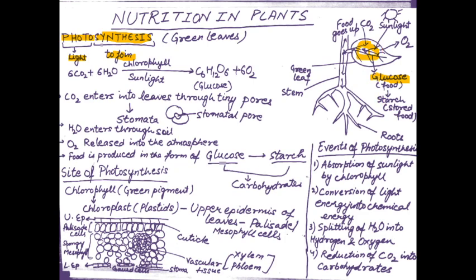The food that is produced — some of the glucose is used by the plant for deriving its nutrition and the rest is stored in the form of starch. Starch is the stored food in plants.